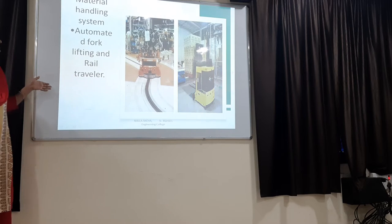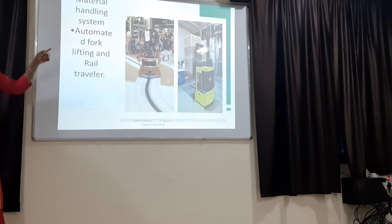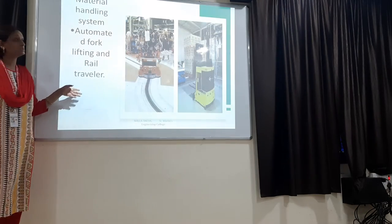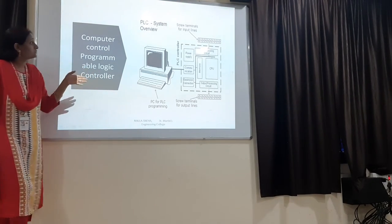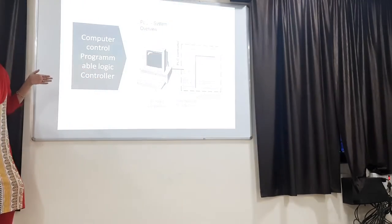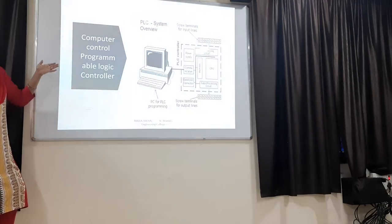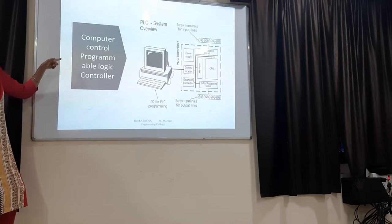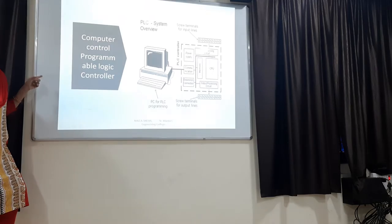Looking at the material handling figure, we can understand how the material handling system works. Automated forklifting and rail travellers are examples shown in this slide. The next component of the FMS is the computer control programmable logic control, which controls all the functions carried out in the manufacturing system.